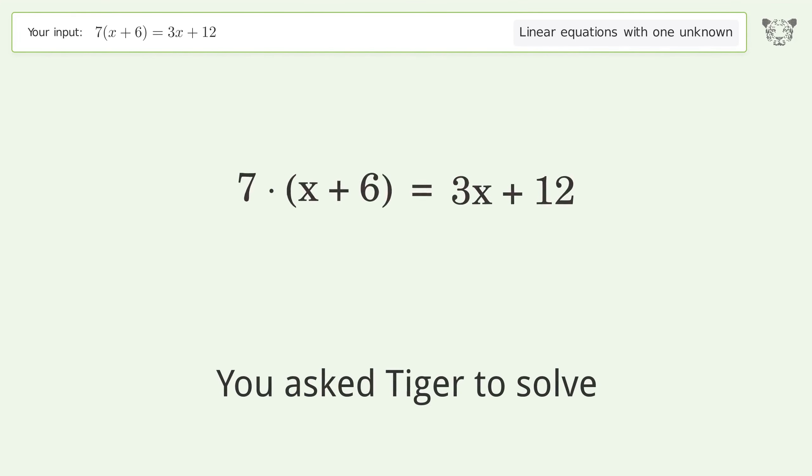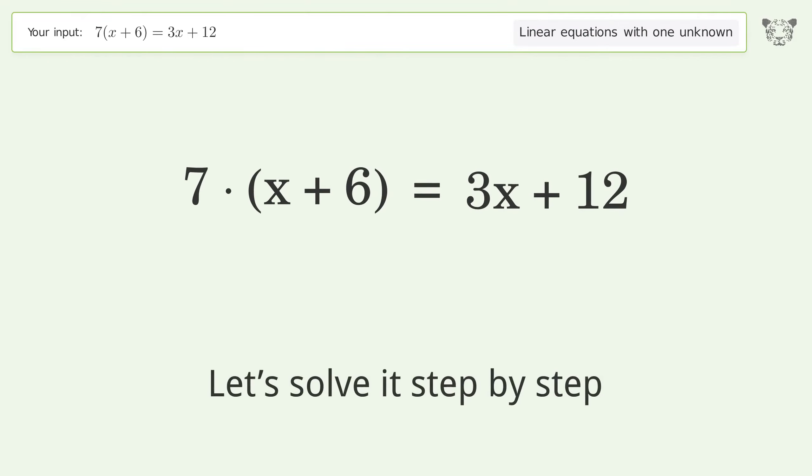You asked Tiger to solve this. This deals with linear equations with one unknown. The final result is x equals negative 15 over 2. Let's solve it step by step.